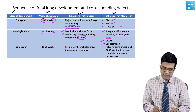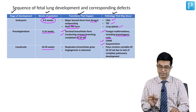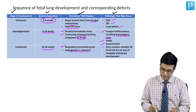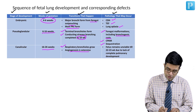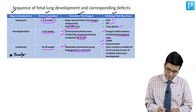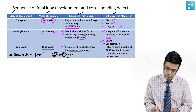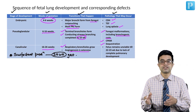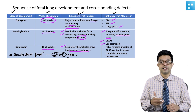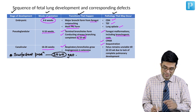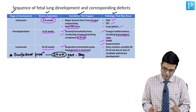The third stage is the canalicular stage, occurring between 16 to 26 weeks. This is when respiratory bronchioles grow and angiogenesis is extensive. An important MCQ point: surfactant production begins at 20 weeks of gestation, as clearly stated in Nelson. It may take another four to six weeks for surfactant to appear in the amniotic fluid and lung alveoli, but production begins at 20 weeks.